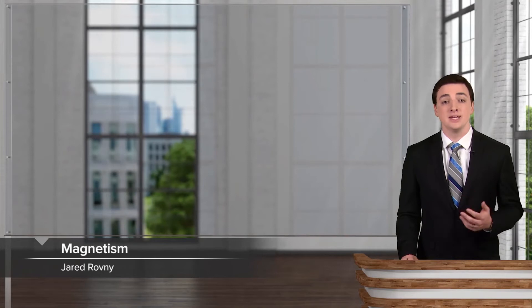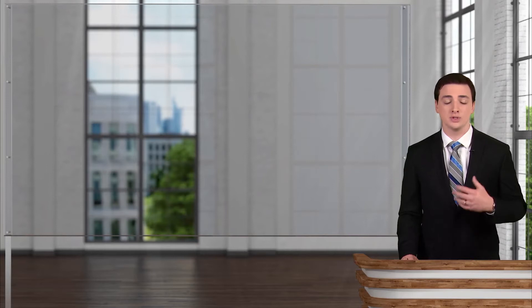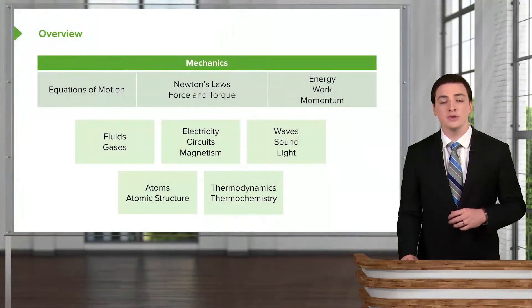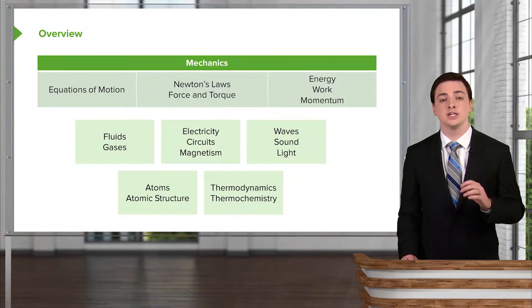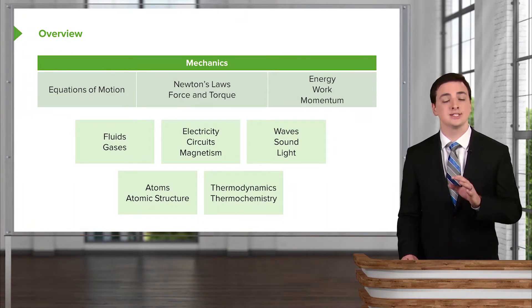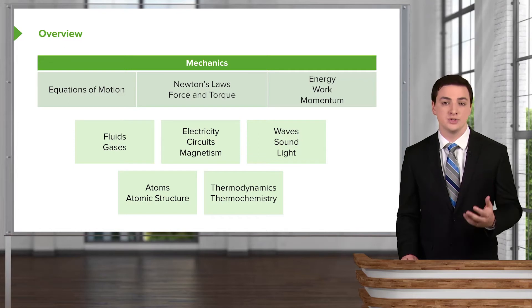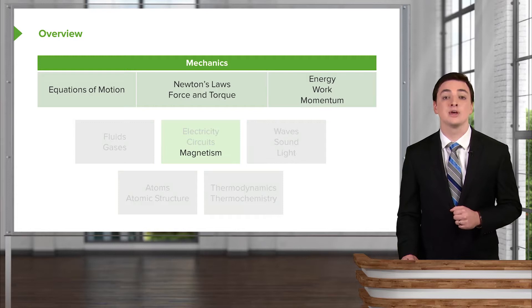We've now discussed the basics of electricity, as well as circuits and how electricity flows in circuits, so we're ready to move to magnetism. As an overview, we've already discussed our basic mechanics as well as the laws governing fluids and gases. So now we're finishing up our section on electricity, circuits, and magnetism, before we move on to wave phenomena and then the microscopic structures. So we'll finish now with magnetism.